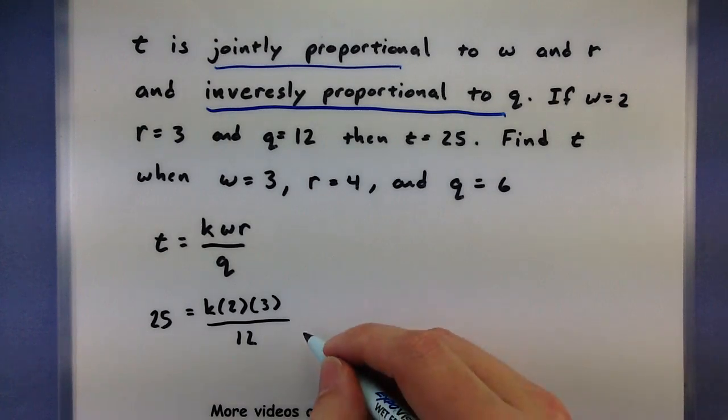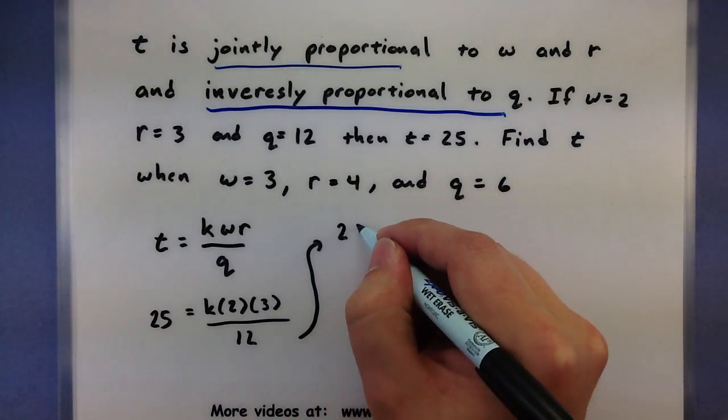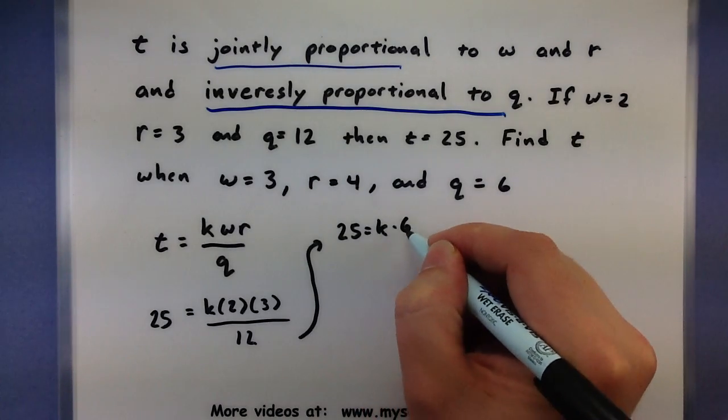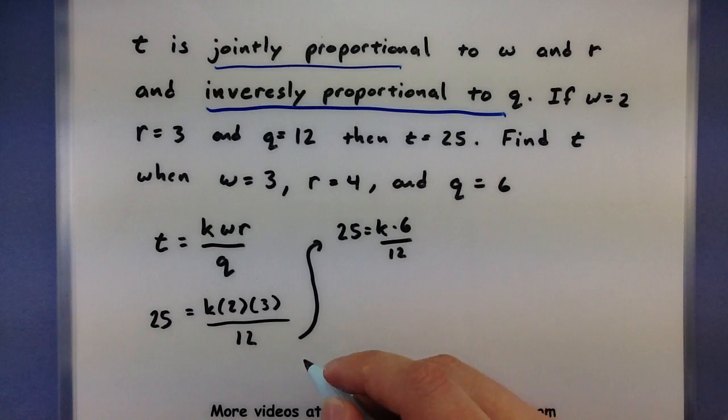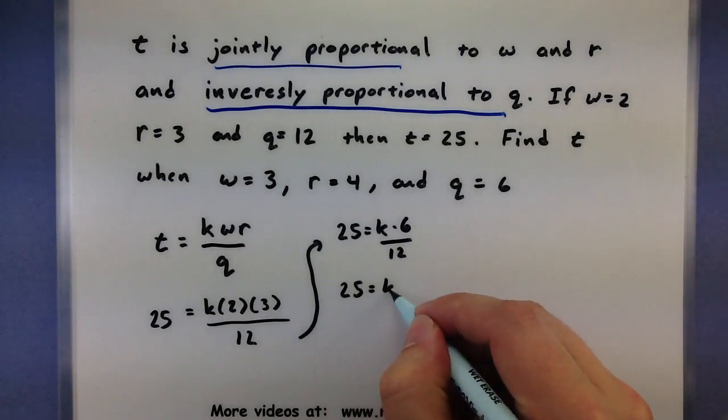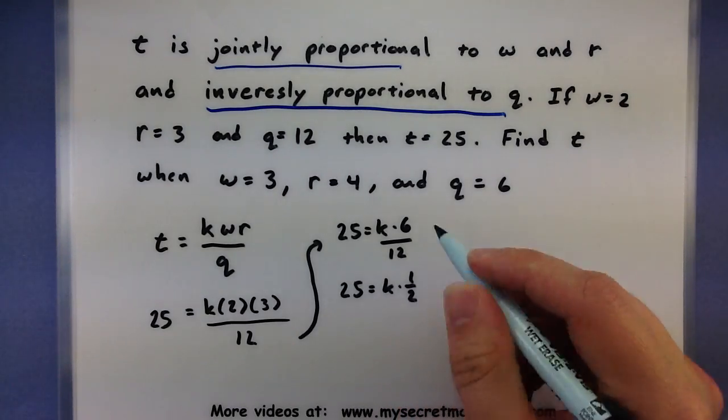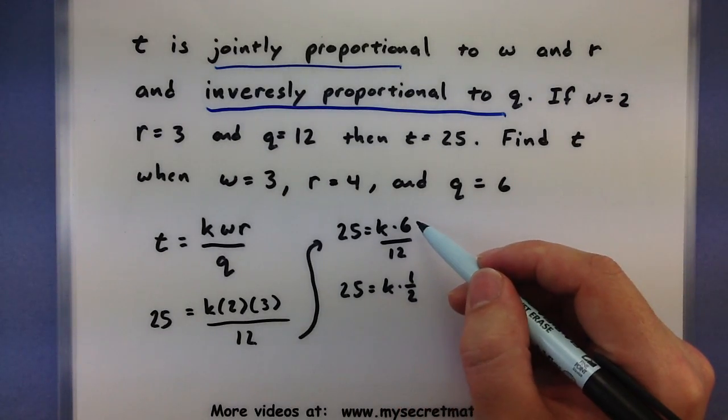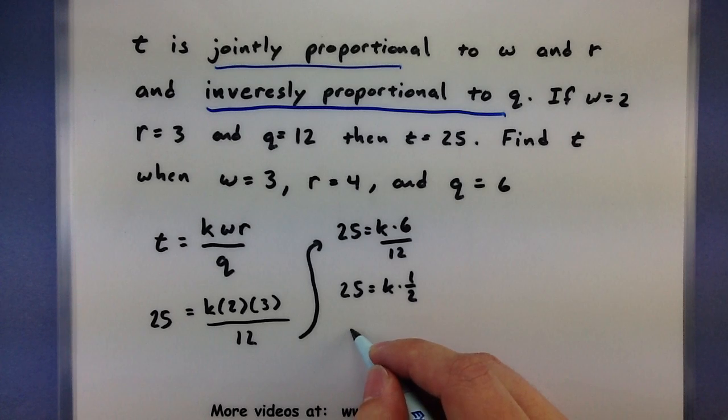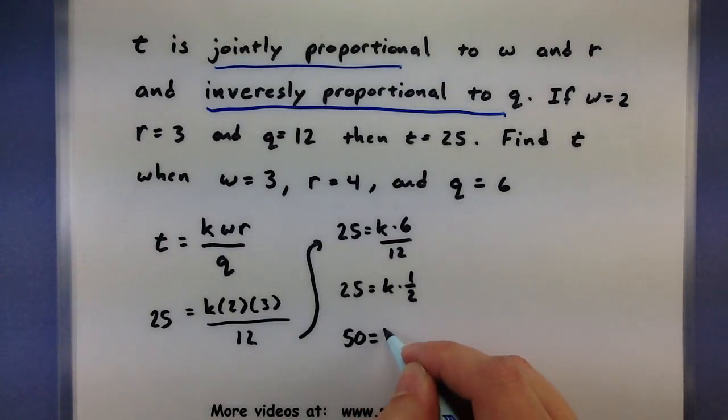We can solve this. So I have 25 equals k times 6 all over 12, which is the same as 25 equals k times 1 half, just reducing the 6 over 12 since 6 goes in the top and into the bottom. So to get k all by itself, multiply both sides by 2, and I get 50 is equal to k.